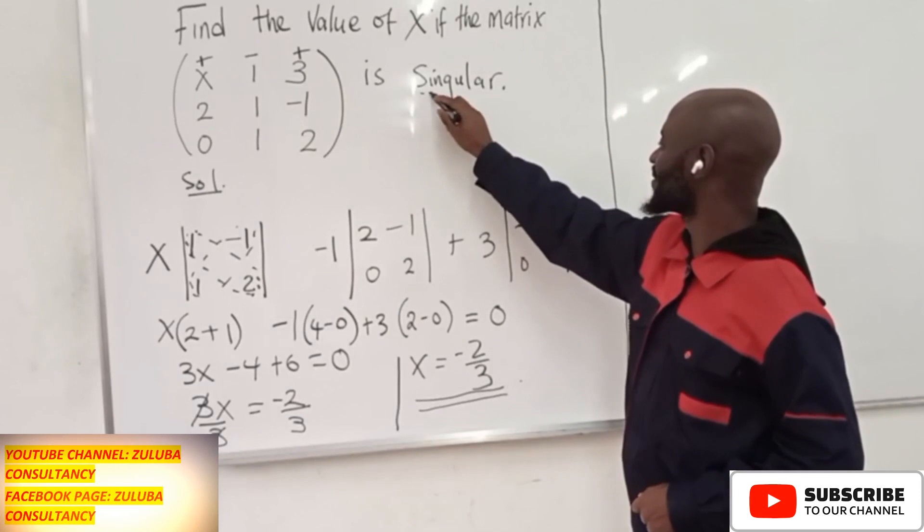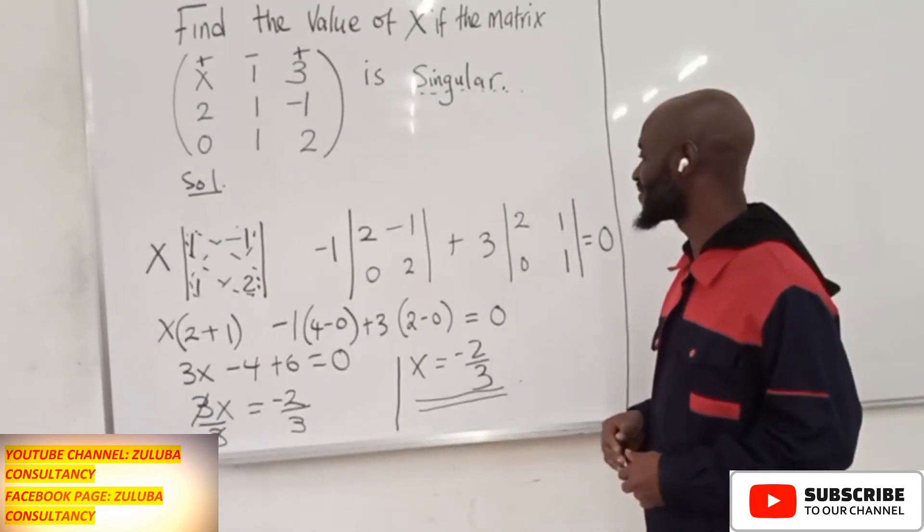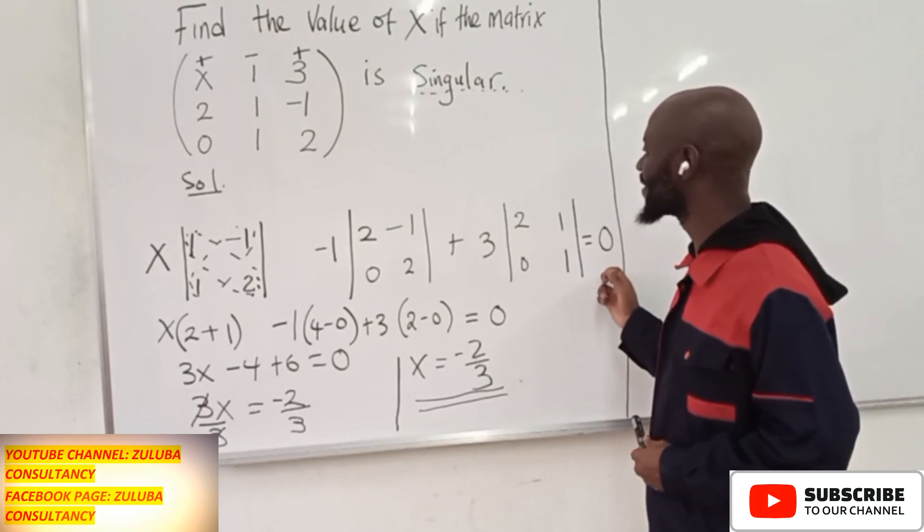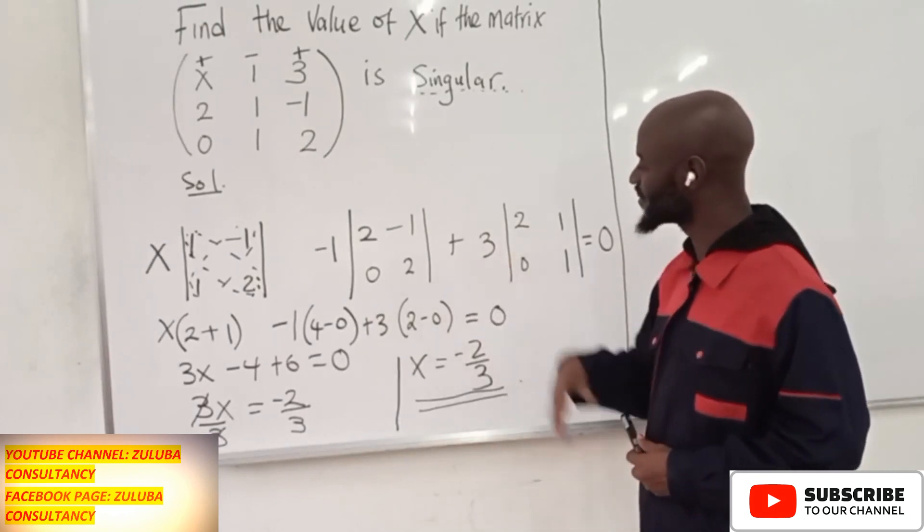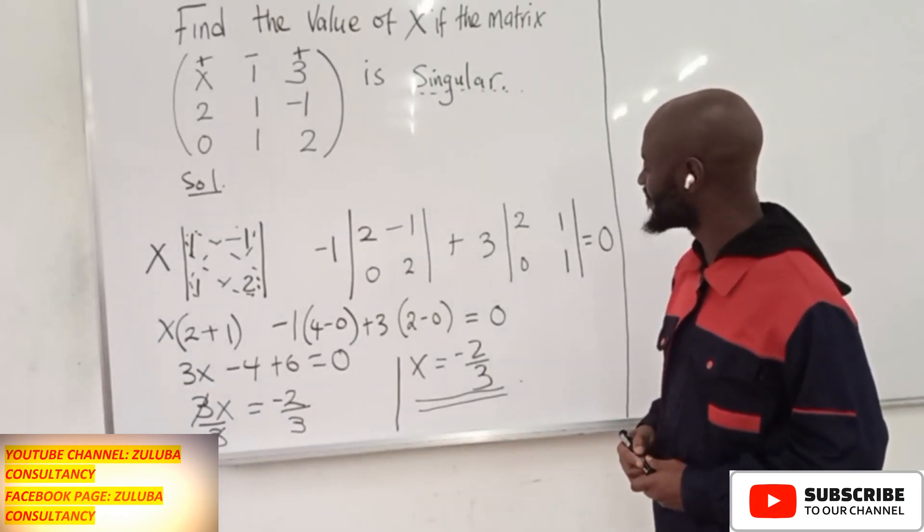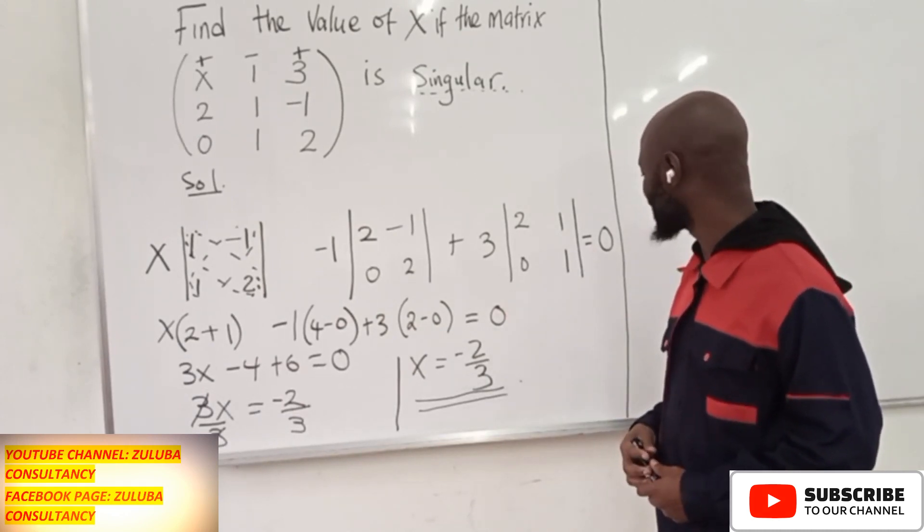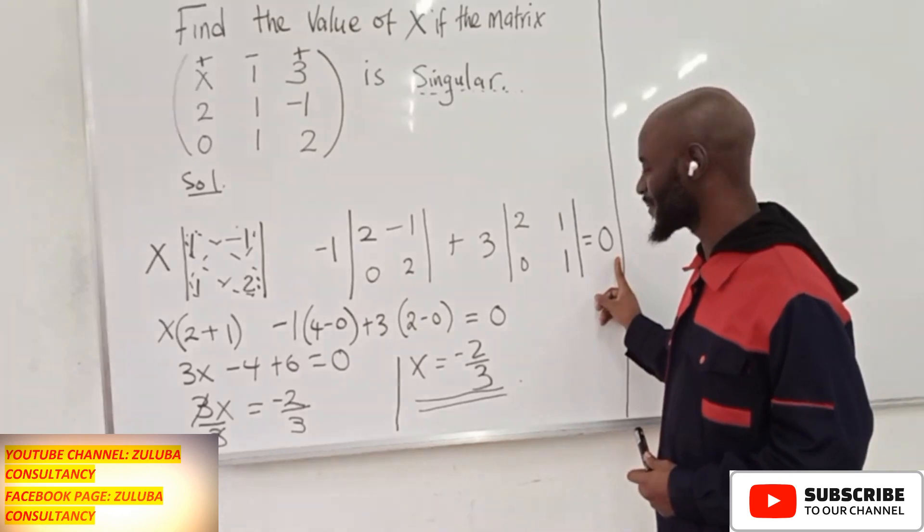Because for a singular matrix, it means it has no inverse. Now, a matrix has no inverse if its determinant is 0. So you can use other rules to find the determinant, like the basket wheel rule or Sarrus's rule. You can still find the statement for the determinant. Once you find that, you equate it to 0.